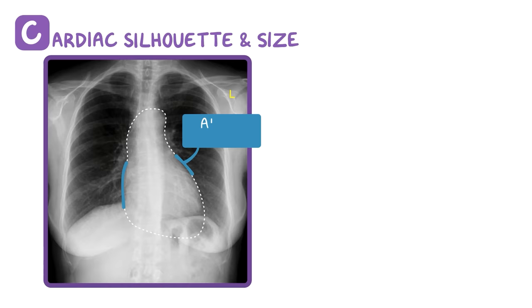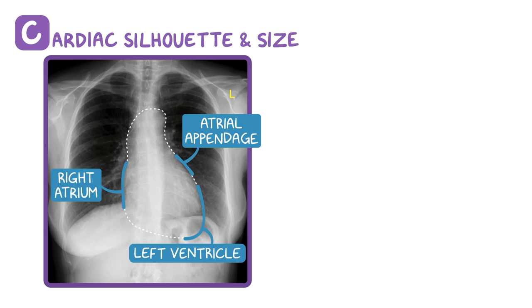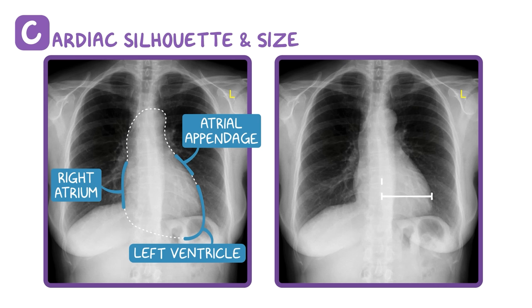C is for cardiac silhouette and size. This is the cardiac silhouette, and there's an atrial appendage, the right atrium, and the left ventricle. Remember, in chest x-rays we define features relative to the patient, so the right atrium is on the left side of this x-ray, and the left ventricle is on the right side. Measuring across a normal heart is less than 50% of the greatest diameter of the ribcage measured from the inner portion of each rib. Any larger, and there may be cardiac pathology.